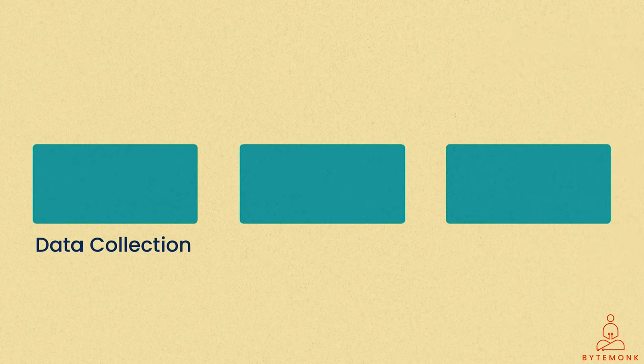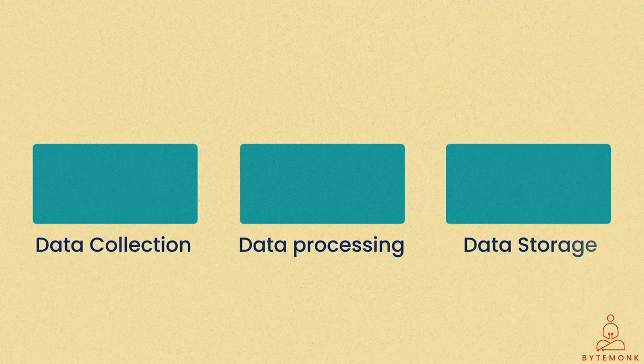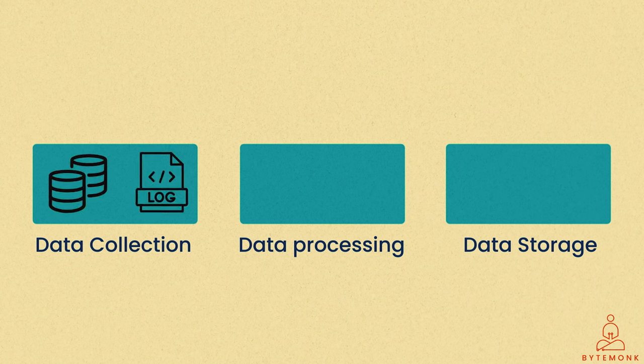At a high level, batch processing involves three steps: data collection, data processing, and data storage or output. In batch processing, data is collected over a period of time until a sufficient amount is accumulated for processing. This data can come from various sources such as databases, logs, files, or even streaming sources where the data is collected and stored for later analysis.